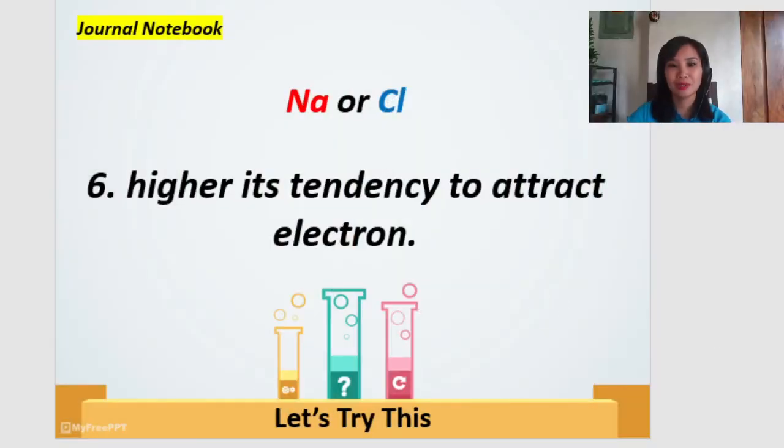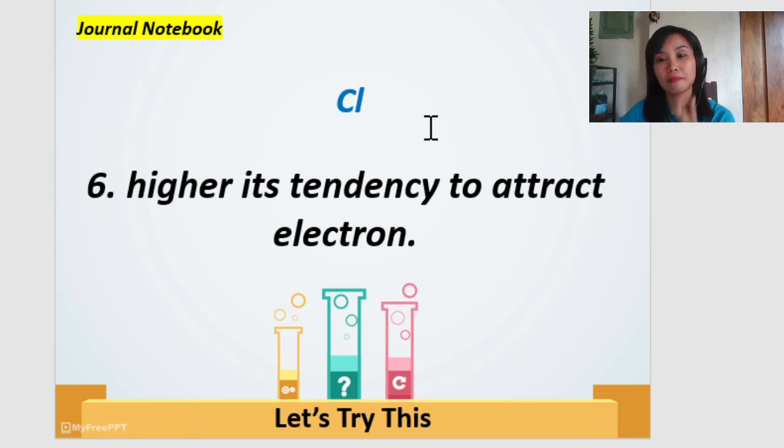Okay. Time is up. So, what is the correct answer? Very good. Chlorine. So, it is the one that is better at attracting electrons. Chlorine is good at that, right? Can you remember? It is an ion. Once it forms a compound, it will have an anion. Negative, right? Okay. Next.